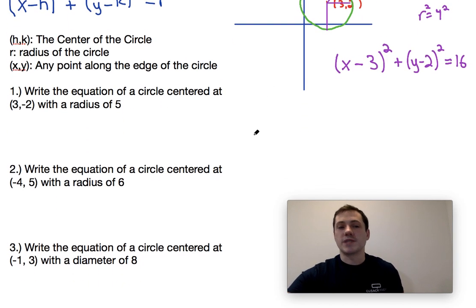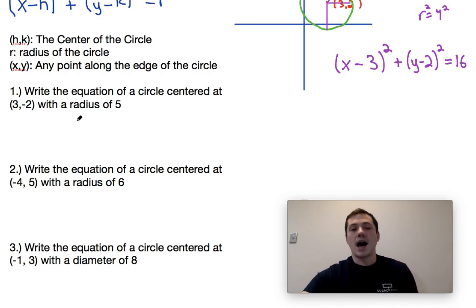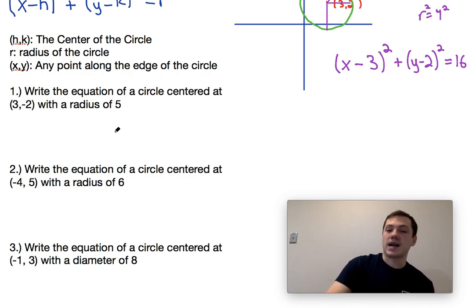So going on, we have a few simple example problems. Let's say we wanted to write the equation of a circle that was centered at the point three comma negative two and had a radius of five. So again,